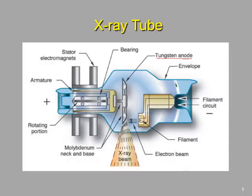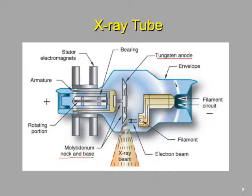You'll notice there is a separate material — molybdenum — for the neck and internal portion of the base. Why do we do that? It is more lightweight, yet still has a very high heat tolerance, which allows us to rotate this anode at high speeds with a decreased amount of mechanical energy required.